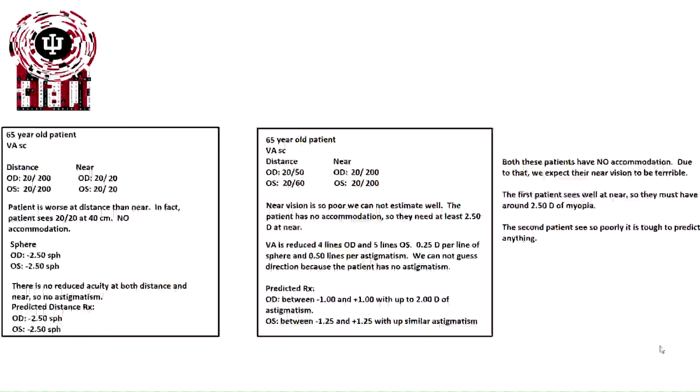In this case, because it's the inverse of the 40 centimeters, we know they see perfectly clear at one distance, they have to be a minus 2.50 sphere. There is no reduced acuity at both distance and near, so there appears to be no astigmatism in this person. Our predicted distance RX would then be minus two and a half spheres OU.